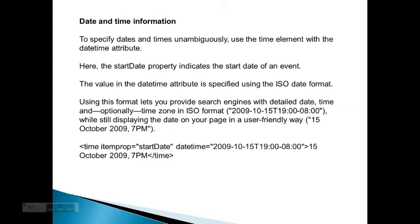Date and time information. Specifying dates and times unambiguously uses the time element with the datetime attribute. The start date property includes the start date of an event. The value in the datetime attribute is specified using the ISO date format. Using this format lets you provide search engines with detailed data — date, time, and optionally time zone in ISO format. For example: 2009-10-15T19:00-08:00 GMT, while still displaying the date in a user-friendly way: the 15th of October 2009 at 7pm. You use the time element with itemprop equals startDate, datetime, and then the ISO format value, pointing to October 15th 2009, 7pm.